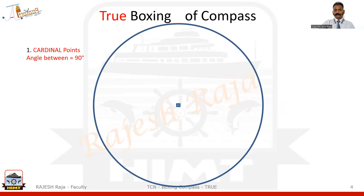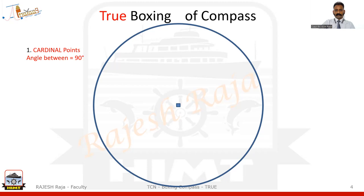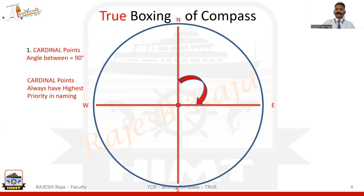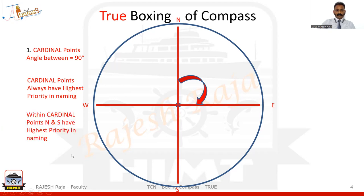Let us start with the first one — cardinal points. There are four cardinal points and the angle between them is 90 degrees. The most famous ones are north, then east, then south at the bottom, and west. Cardinal points always have the highest priority in naming, so they are the simplest to remember. Within the four cardinals, when doing chart work or navigation questions, you will realize that north and south have more priority than east and west. I will keep that in mind when naming directions.